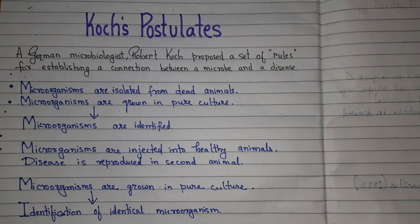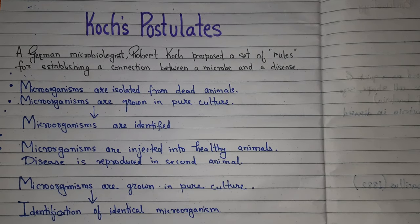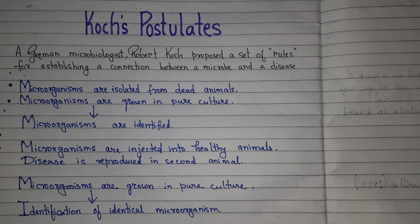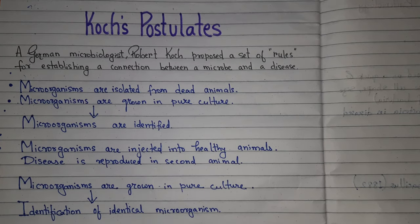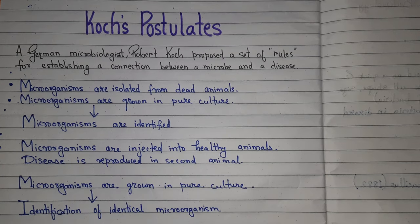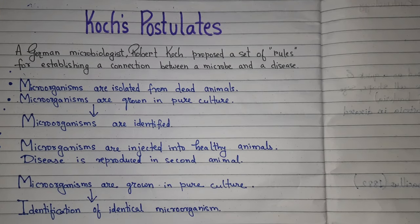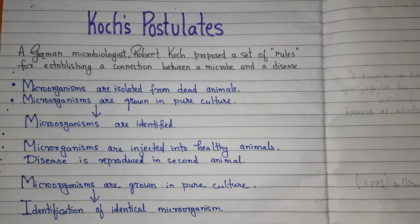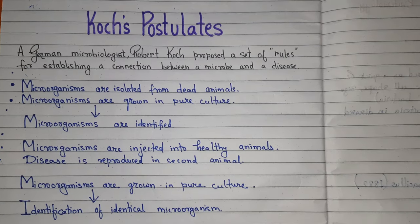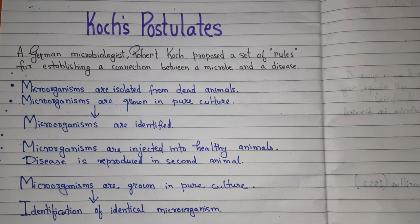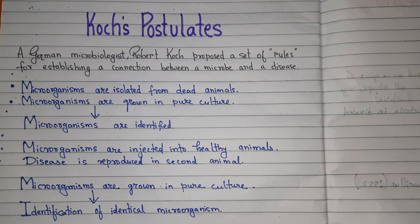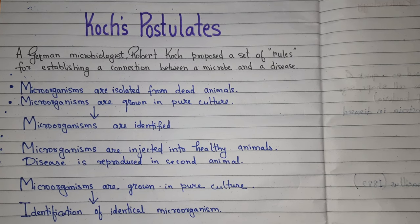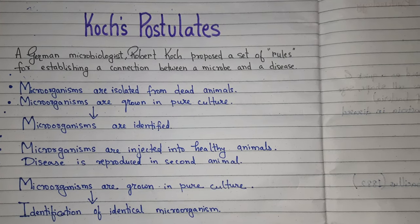Now we will discuss Koch's postulates. Robert Koch, a German microbiologist, proposed a set of rules for establishing a connection between a microbe and a disease. In his postulates, microorganisms are isolated from dead animals and then grown in pure culture. These microorganisms are identified and then injected into healthy animals, and the disease reproduces in the second animal.